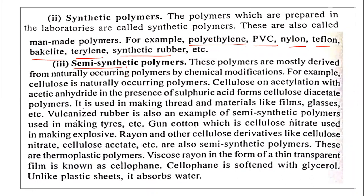Semi-synthetic polymers are mostly derived from naturally occurring polymers by chemical modification. For example, cellulose is a natural polymer. When cellulose undergoes acetylation with acetic anhydride in the presence of sulfuric acid, cellulose diacetate — a semi-synthetic polymer — is formed. Another example is vulcanized rubber, which is also a semi-synthetic polymer used in making tires.